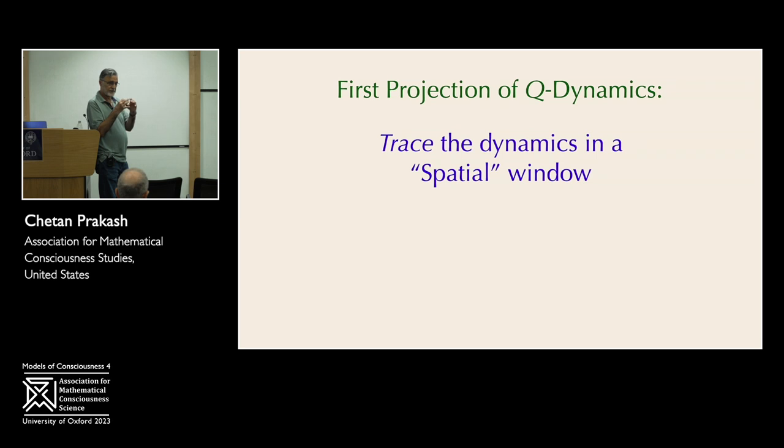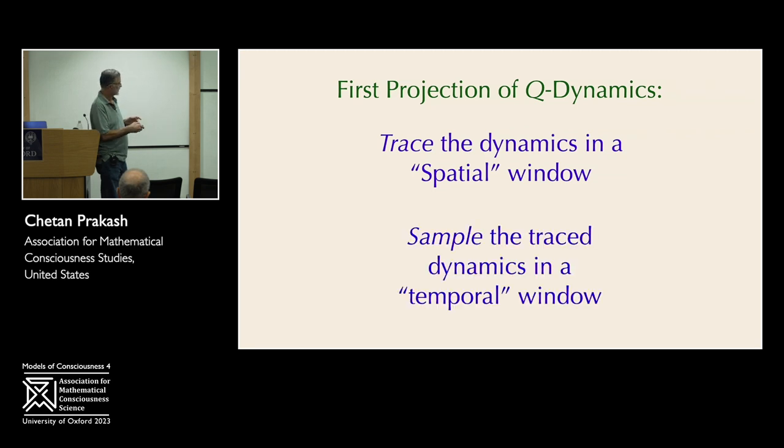So the first idea is to trace the dynamics in what I'm calling a spatial window. And I'm putting spatial in quotes because there is no space and time here. By spatial, I just mean a smaller set, a subset. We're starting with the subset of the state space, which is the experiential space X. And what we're doing is we're projecting this dynamics down to a dynamics on a smaller window, a spatial window. And the other thing that you can do with this, when you're trying to observe the dynamics with your limited observational capabilities, is that you can look at the dynamics in clumps. You can sample the dynamics, in other words, statistically sample the dynamics. So the other kind of projection is to sample the trace dynamics in a temporal window. And again, temporal here just means as N clicks on, you're looking at certain bunches of Ns.